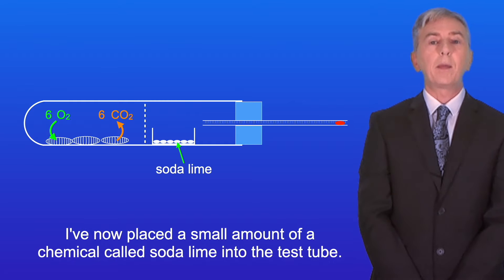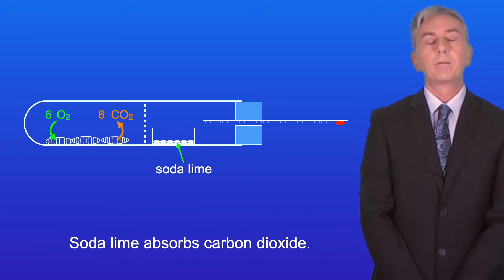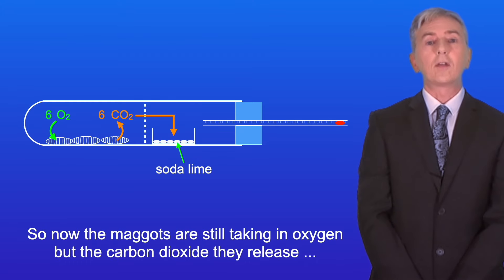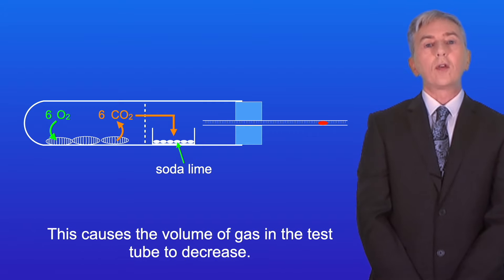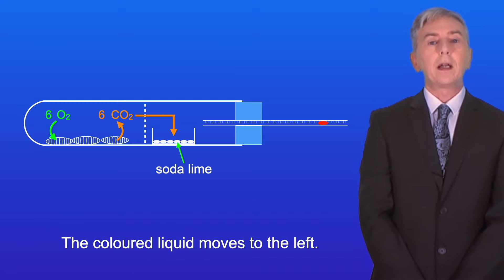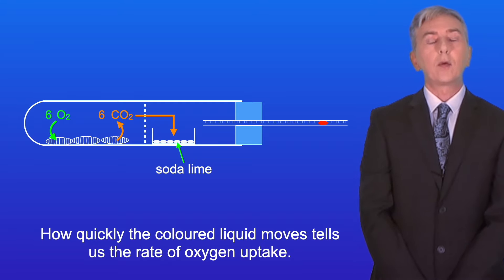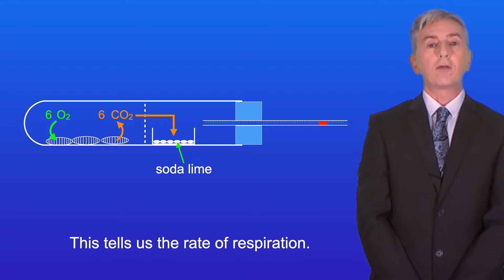I've now placed a small amount of a chemical called soda lime into the test tube. Soda lime absorbs carbon dioxide. So now the maggots are still taking in oxygen but the carbon dioxide they release is being absorbed by the soda lime. This causes the volume of gas in the test tube to decrease and the coloured liquid moves to the left. How quickly the coloured liquid moves tells us the rate of oxygen uptake, and this tells us the rate of respiration.